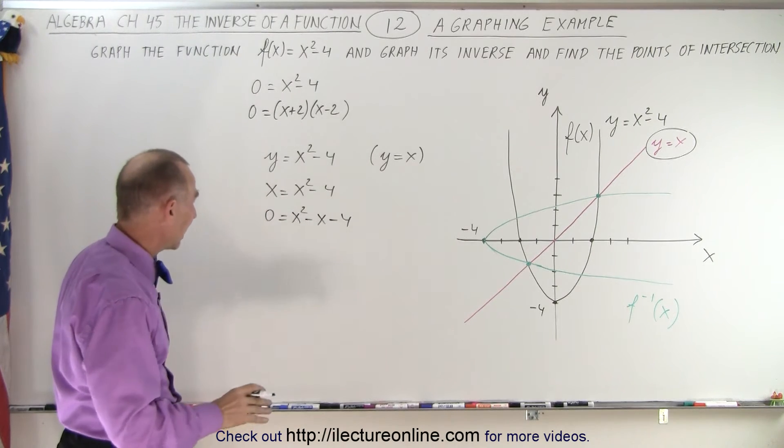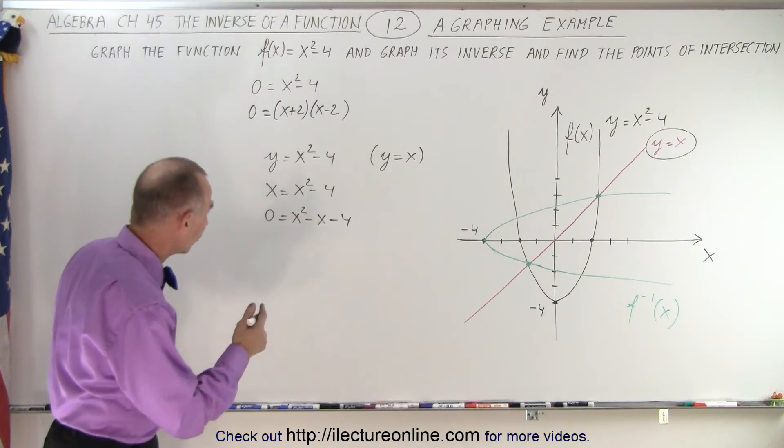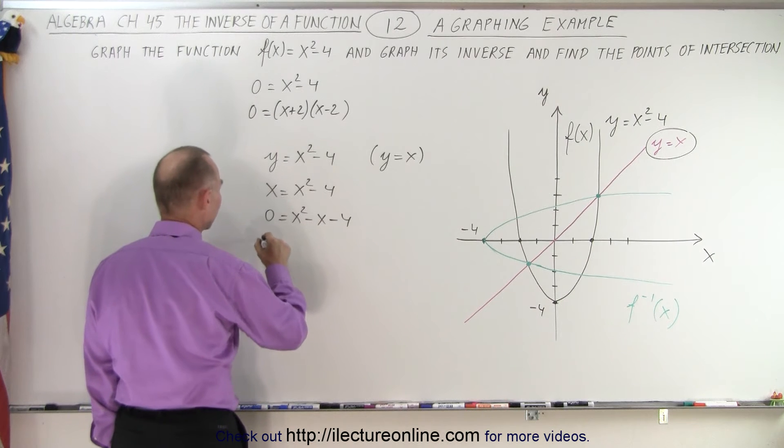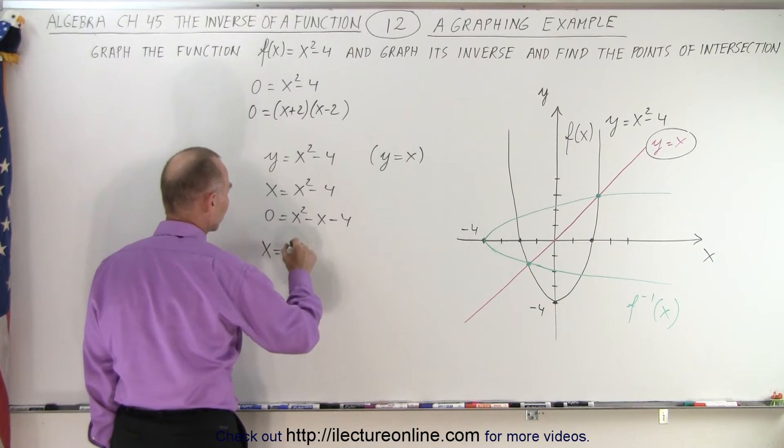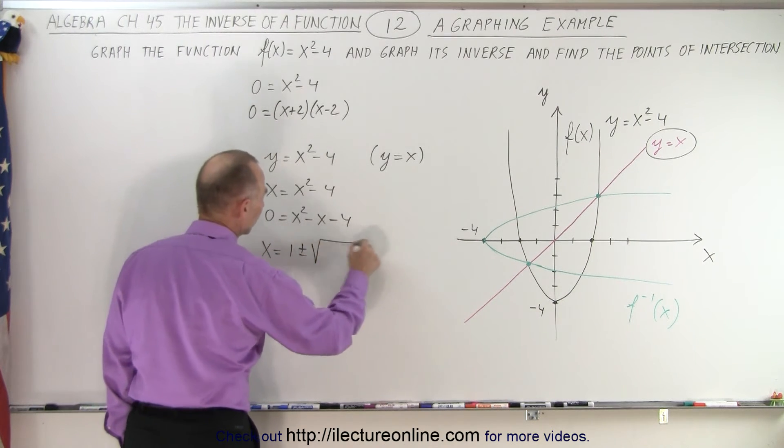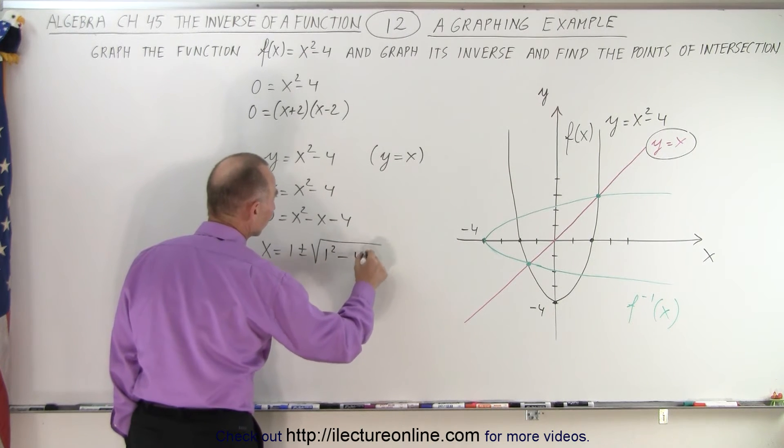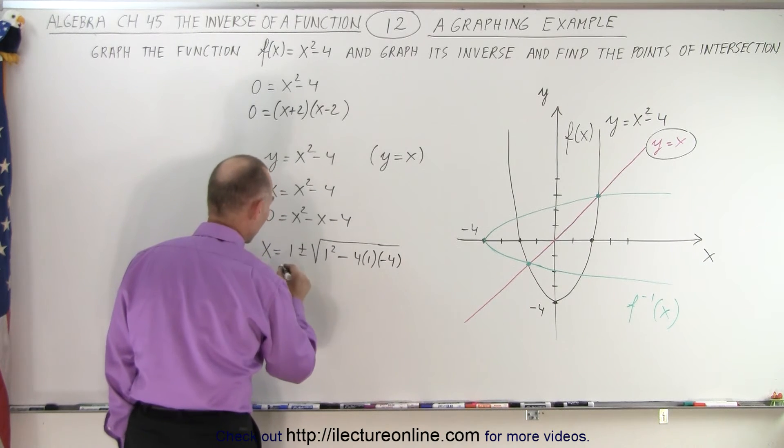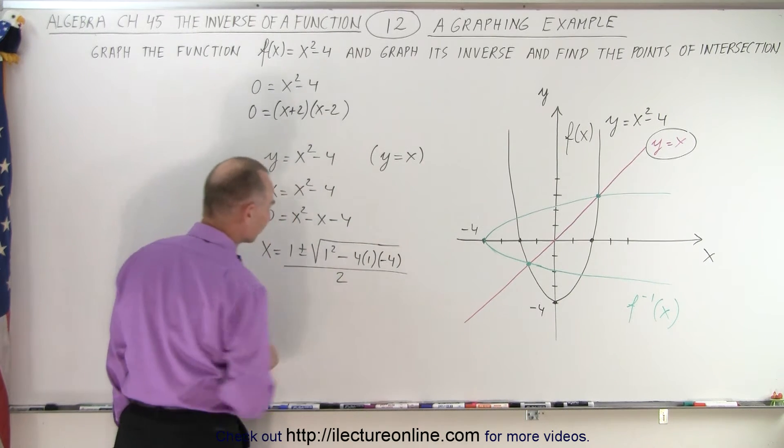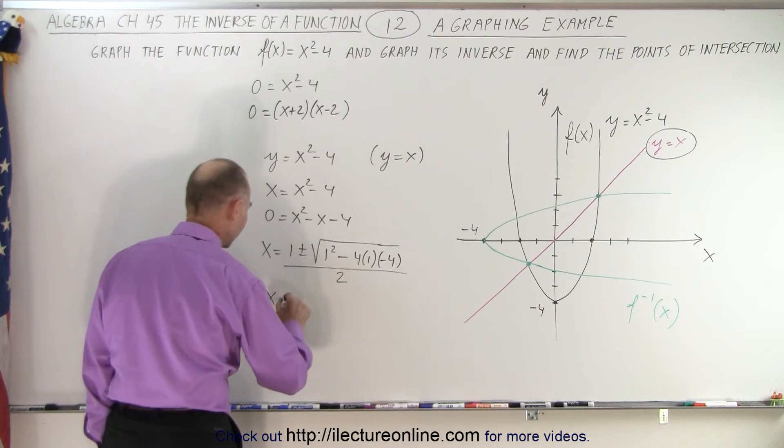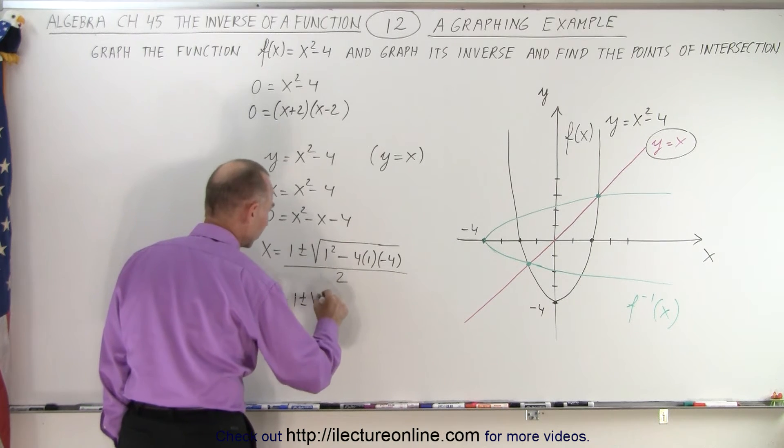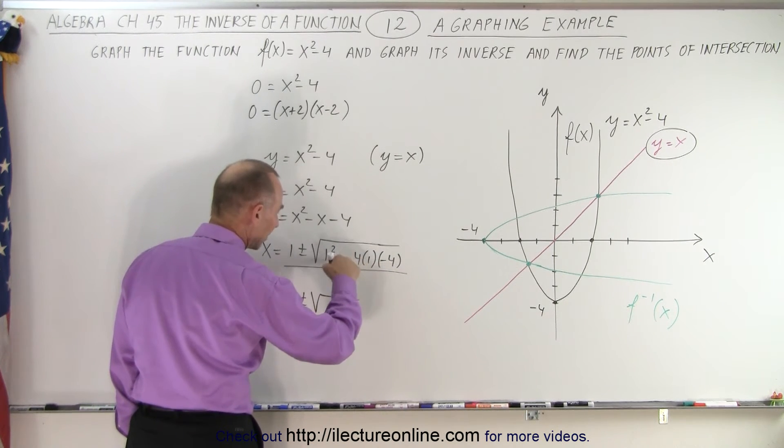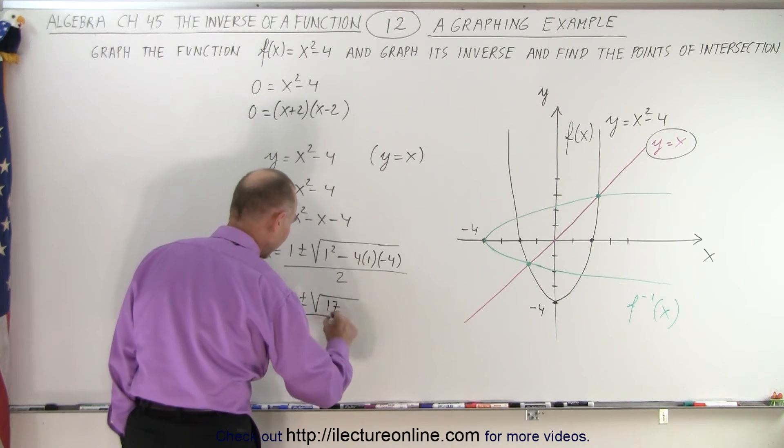Unfortunately, we can't factor that one, so we have to use the quadratic formula that x is equal to minus b, which is 1, plus or minus the square root of b squared, which is 1 squared, minus 4 times a times c, which is minus 4, all divided by 2a, which is 2. So we get x is equal to 1 plus or minus the square root of, that's a positive 16 plus 1, that's 17, divided by 2.